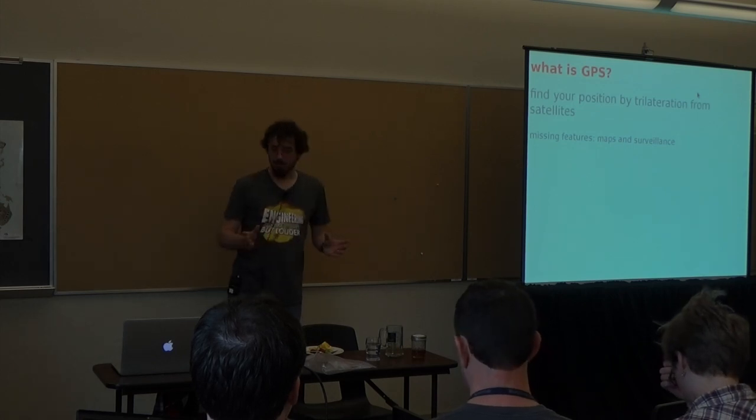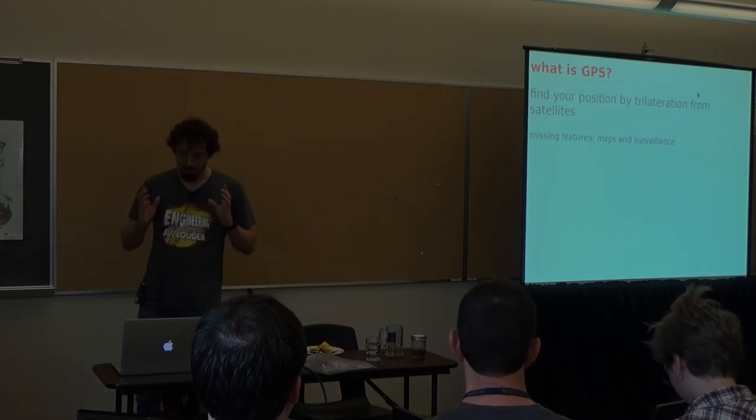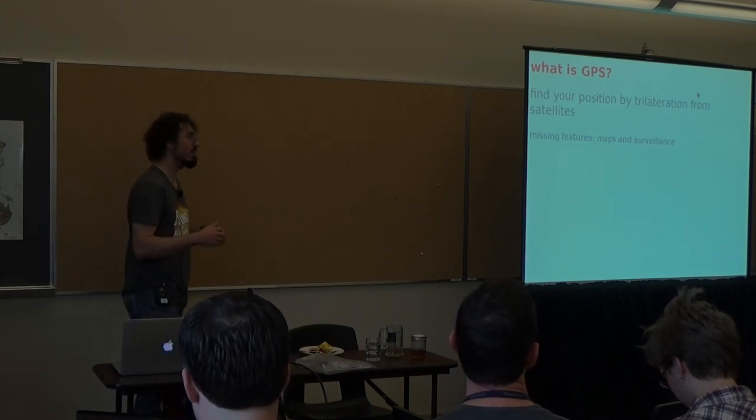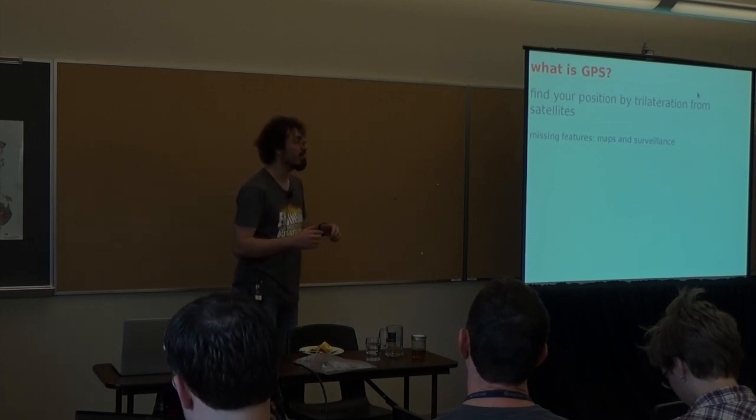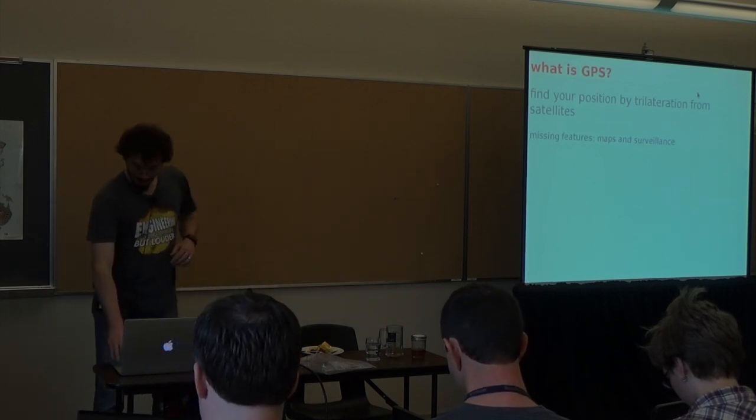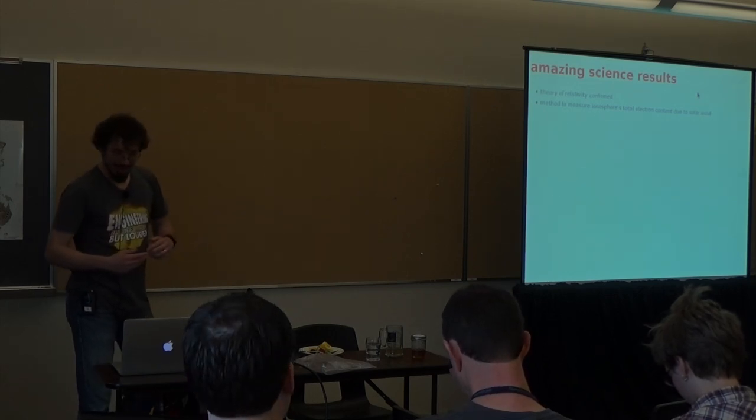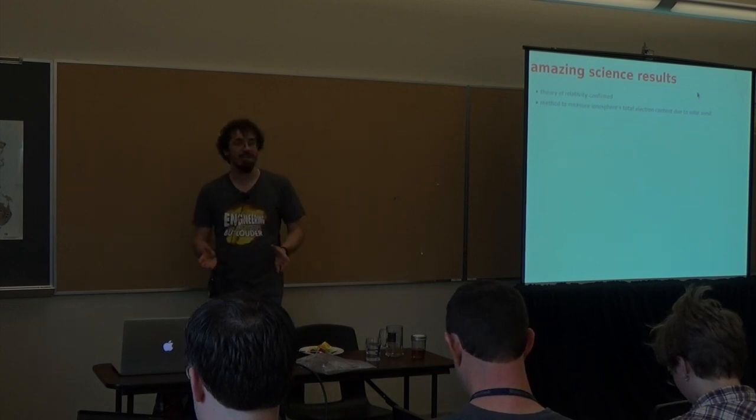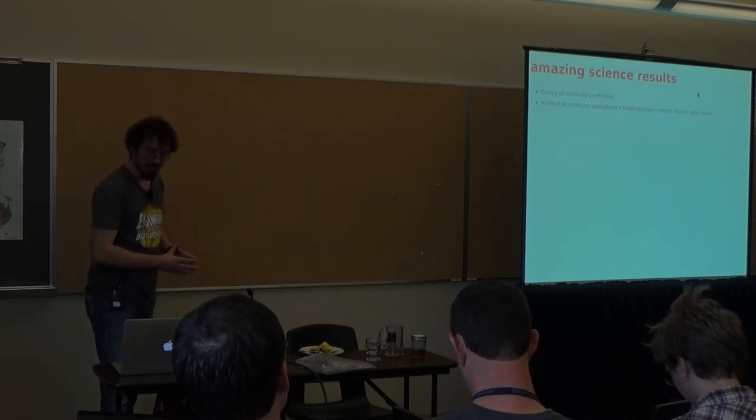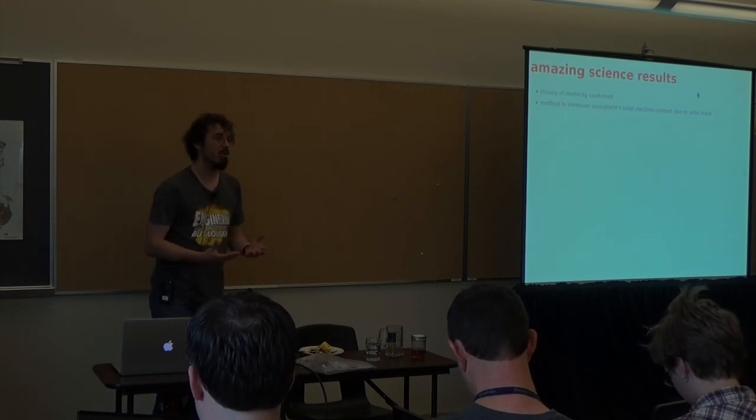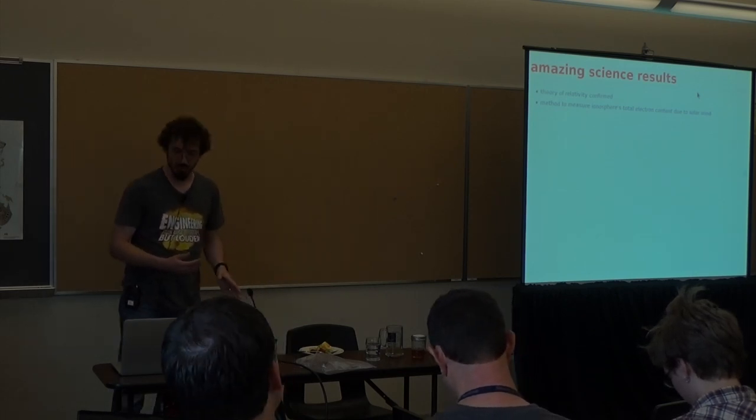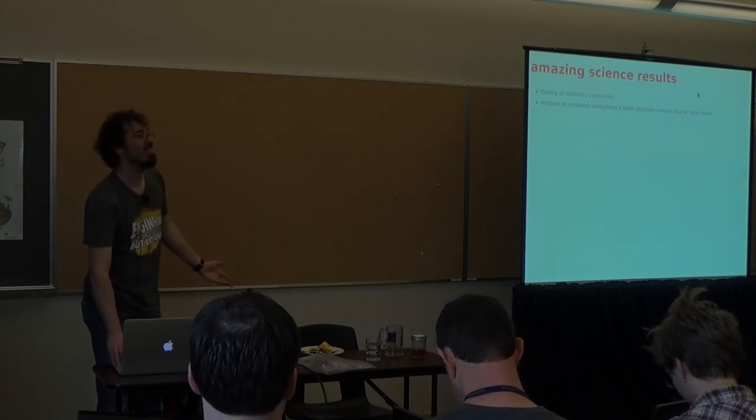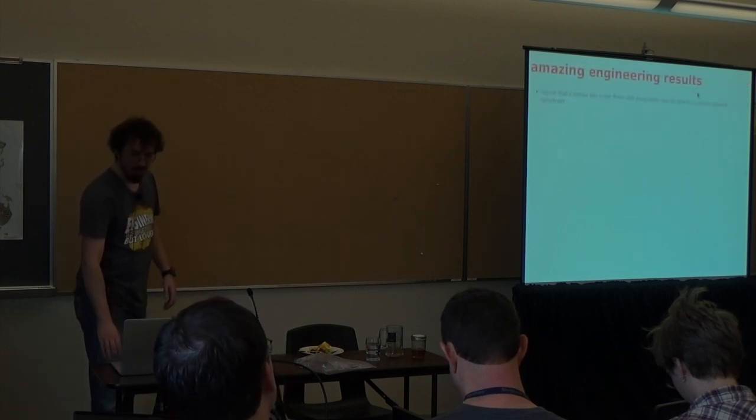In brief one more time, GPS is about finding your position by trilateration from signals from satellites. Things that GPS does not do include maps and surveillance, so you have to add those at a higher layer. Some amazing science results, you know, confirmation of the theory of relativity in something that we use every day. And also a method that you can at home, at least if you have a dual frequency receiver, which you probably don't, you can measure things like the ionosphere's total electron content. Yeah, just citizen science kind of stuff you can do.